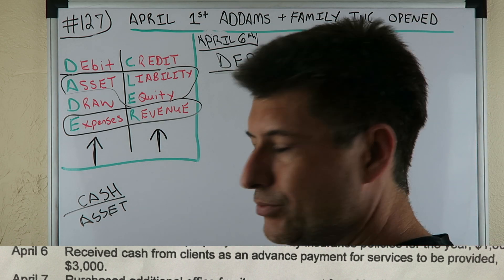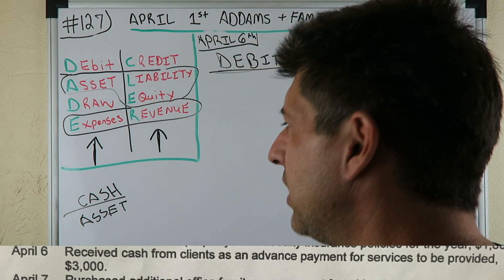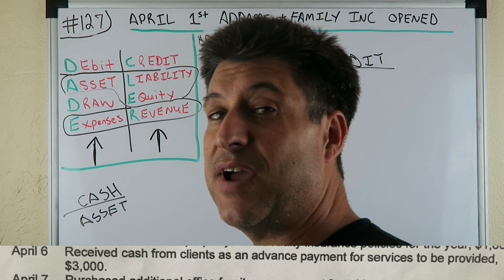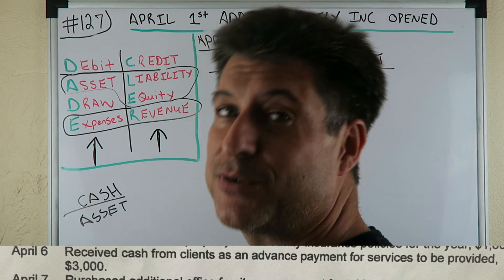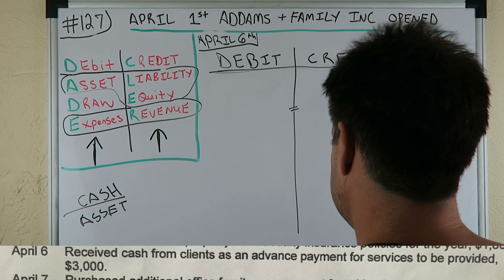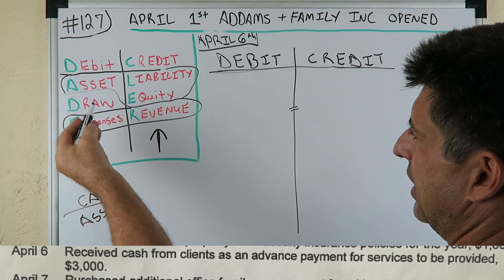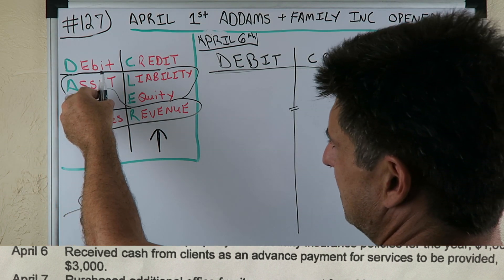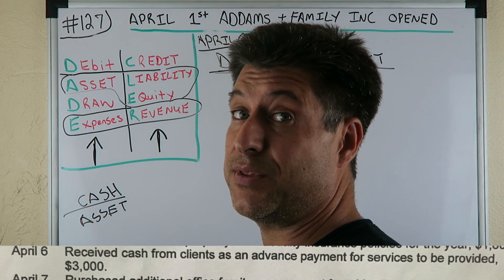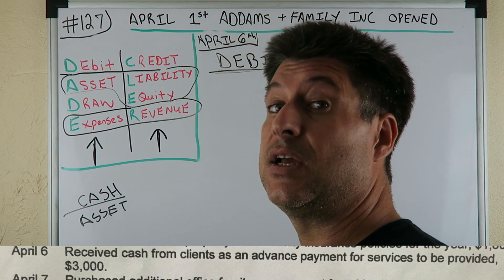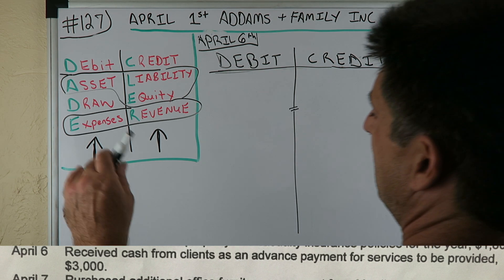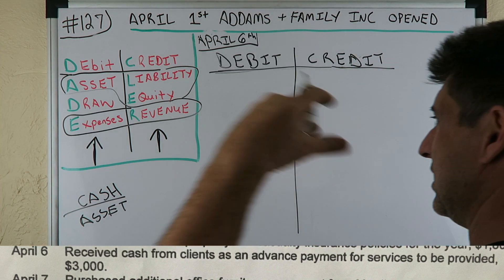We said we had cash coming in — this is like our fourth journal entry with cash in a row. We're excited because we finally received cash instead of outflows. So we're receiving cash. We know cash is an asset, and looking at DCADLE under asset — if it's increasing, it's going to be a debit. If we started with nothing and now we have $3,000, is our cash increasing? It's increasing. We have $3,000 more now. So we're going to say debit $3,000 cash.